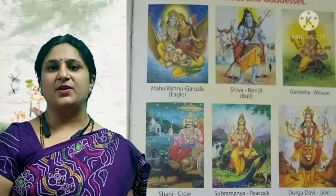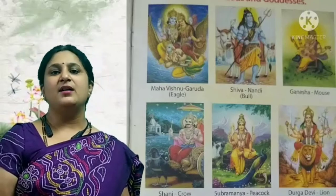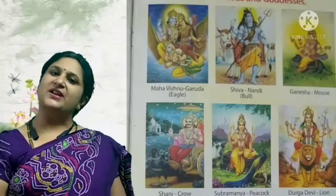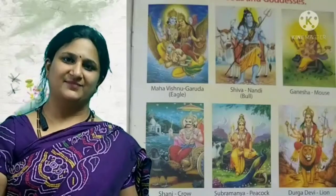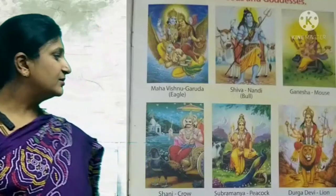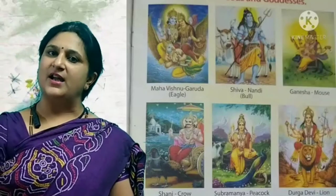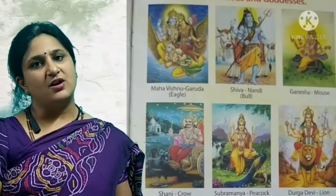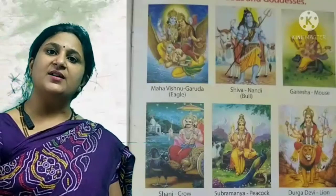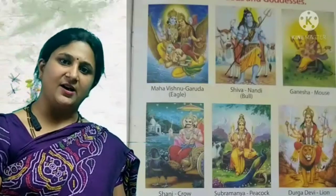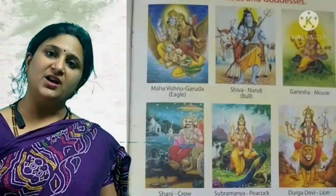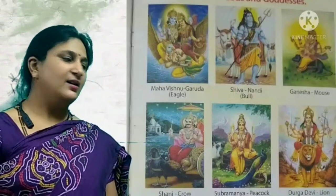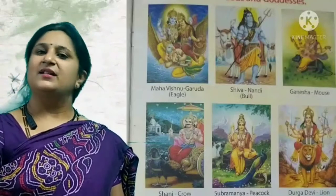Now, all of you open your integrated book. Open page number 46. We shall read all the Vahanas together once. Keep your finger and read along with me. Garuda is the Vahana of Lord Vishnu. Nandi is the Vahana of Lord Shiva. Mouse is the Vahana of Lord Ganesha. Crow is the Vahana of Lord Shani. Peacock is the Vahana of Lord Subramanya. Lion is the Vahana of Goddess Durga.